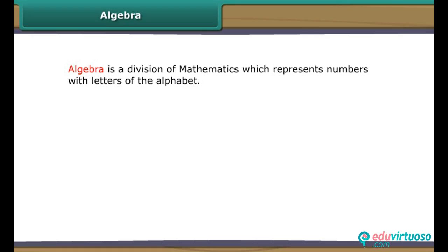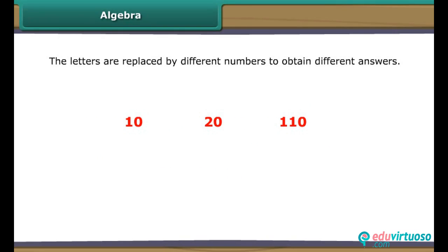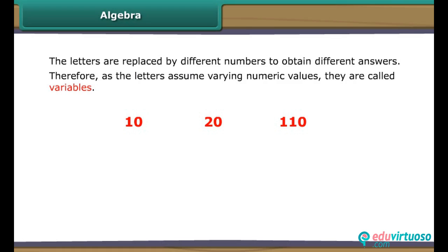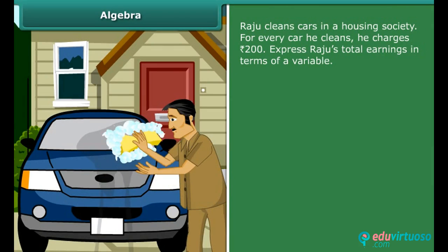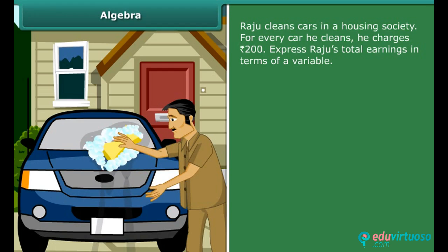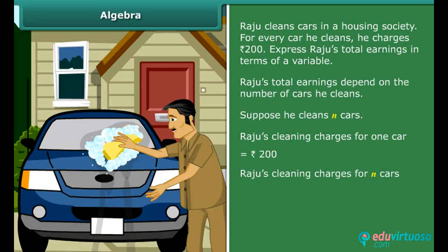Algebra is a division of mathematics which represents numbers with letters of the alphabet. The letters are replaced by different numbers to obtain different answers. Therefore, as the letters assume varying numeric values, they are called variables. For example, Raju cleans cars in a housing society. For every car he cleans, he charges 200 rupees. If he cleans n cars, Raju's total earnings are 200n rupees.